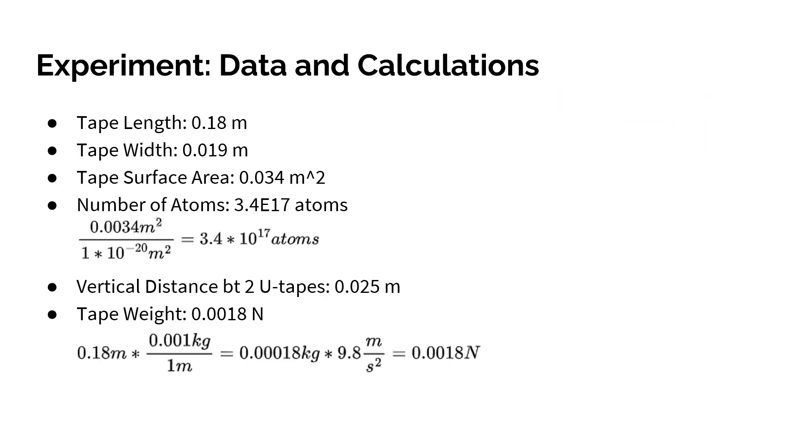The experiment and data calculations are also the same from lab 1. This is the tape length, tape width, tape surface area, number of atoms is all derived from that lab. The vertical distance between the two u-tapes is 0.025 meters, and then the tape weight is 0.0018 newtons. This is the gravitational force that the top one feels.